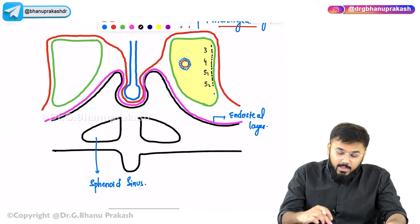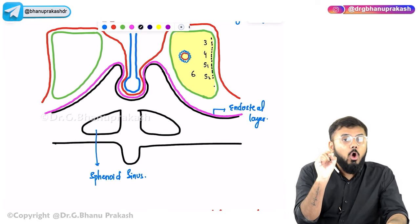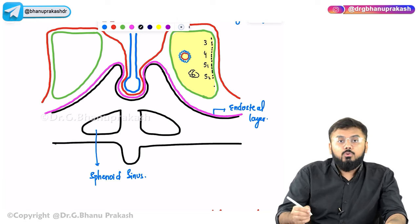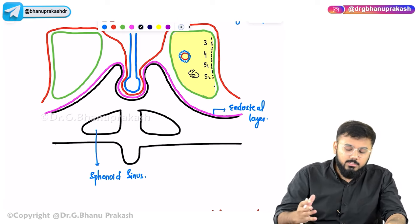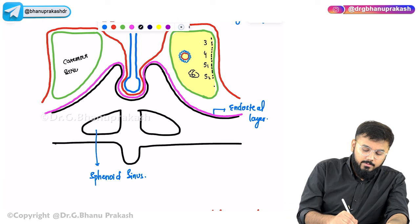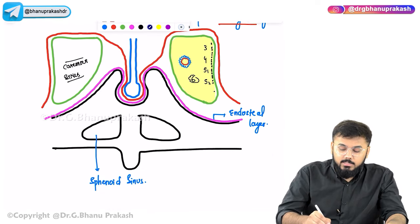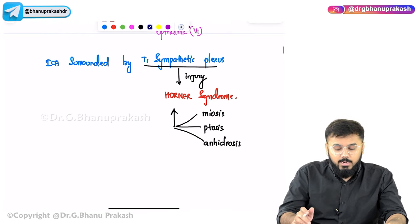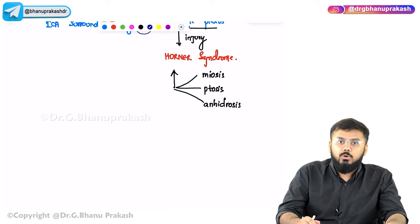Additionally, cranial nerve VI (abducens) is located within the cavernous sinus itself — not just on the lateral wall — and has the longest intradural root of any cranial nerve. Summary of cavernous sinus contents: lateral wall has CN III, IV, V1, V2; within the sinus is the internal carotid artery with T1 sympathetic plexus (injury causes Horner's syndrome) and CN VI.